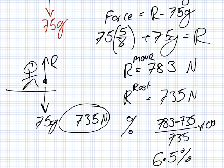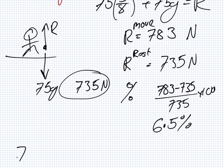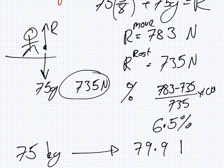So, his reaction force is 6.5% stronger. That means the weight scale thinks he's 6.5% heavier. So, instead of reporting 75 kilograms, the weight scale will report an extra 6.5%. Which is 79.9 kilograms. So, when the elevator is moving up, the weight scale thinks he's 79.9 kilograms instead.